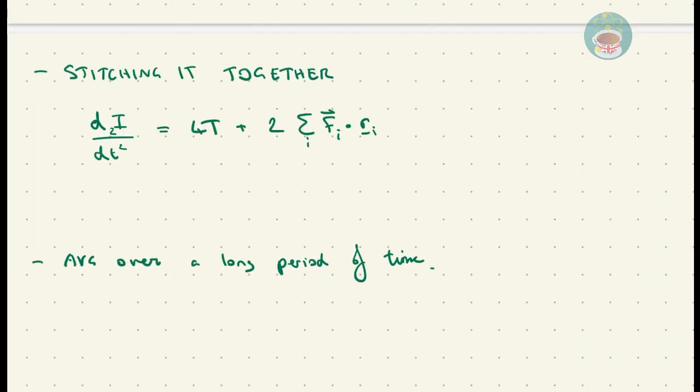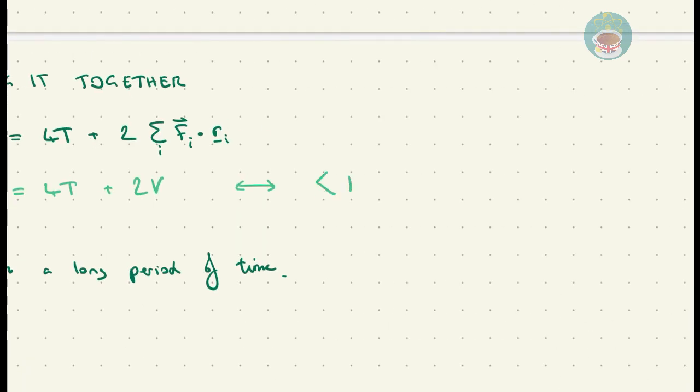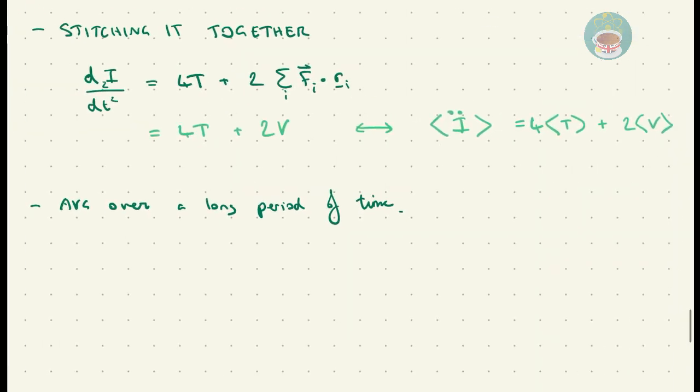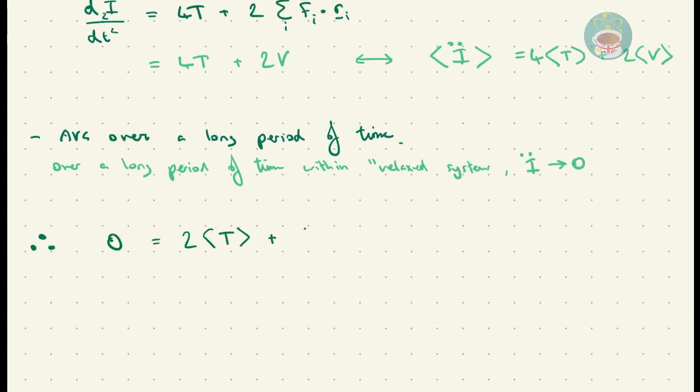Stitching it all together, we get the final equation. Substituting the summation term with what we've just derived, we can say that the second time derivative of momentum is equal to 4 times the total kinetic energy plus 2 times the total potential energy, which we can write in equivalent time averaged format. Over long periods of time in a relaxed system, this tends to 0, and the virial theorem assumes its final form.